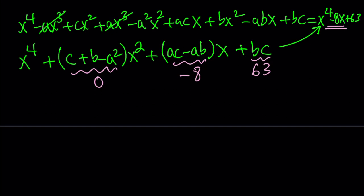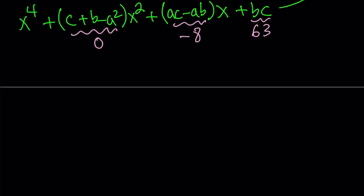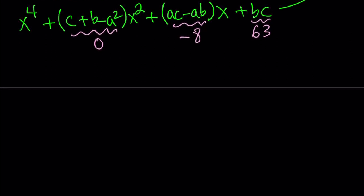So let's go ahead and set up a system of equations and we're going to solve for it. We have three variables and three equations so we should be good to go. From the coefficient of x squared, c plus b equals a squared. I get ac minus ab is equal to negative 8. I can take out an a and write this as c minus b equals negative 8.